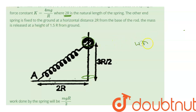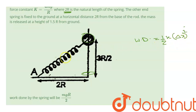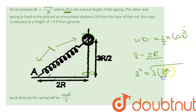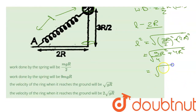The work done by the spring equals ½ × k × (extension)². To find the extension I need L, the stretched length. Applying Pythagoras: L² = (3r/2)² + (2r)² = 9r²/4 + 4r² = 25r²/4, so L = 5r/2.